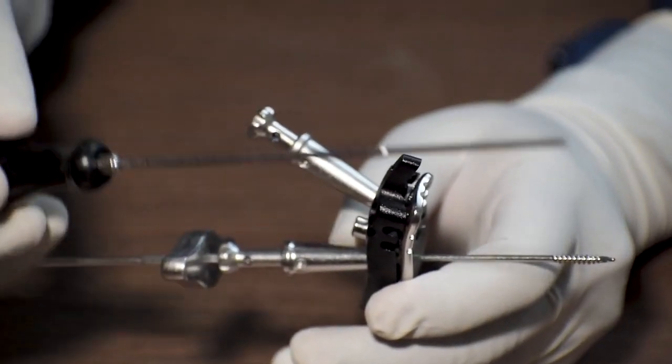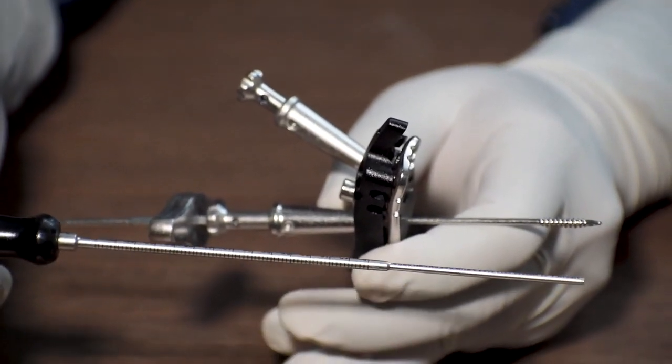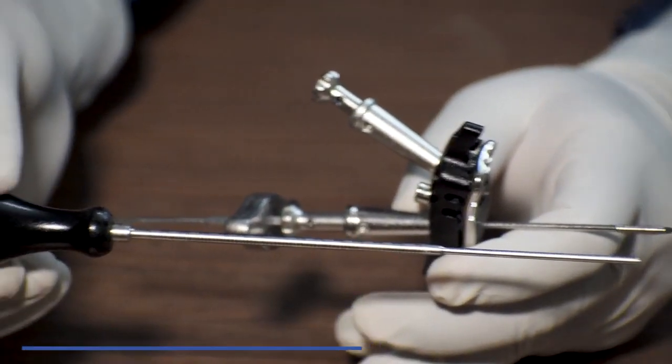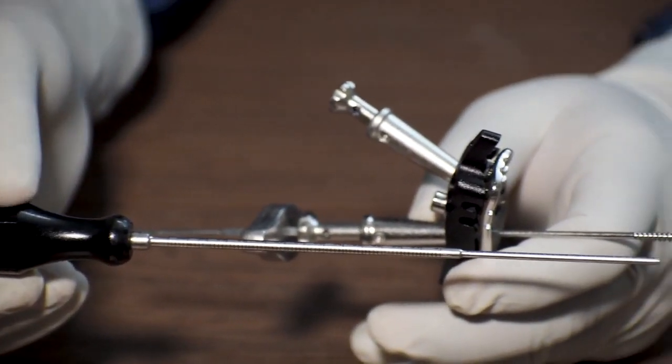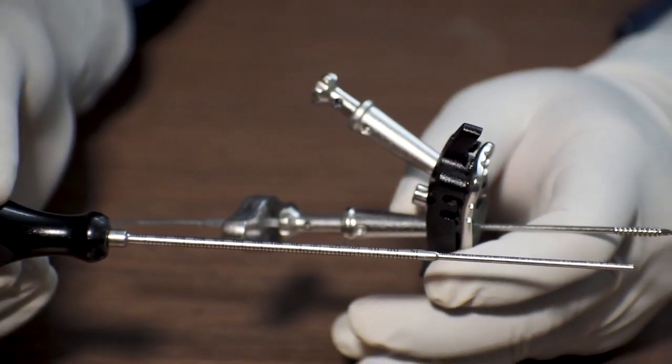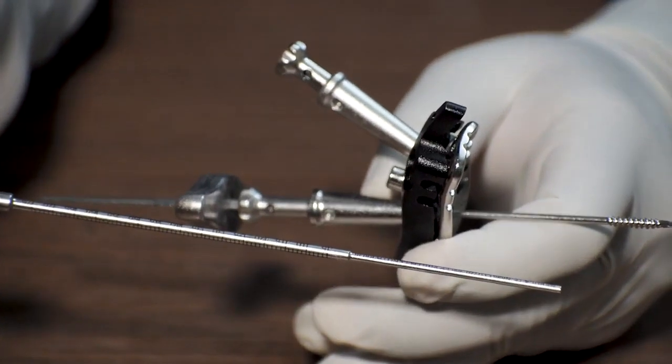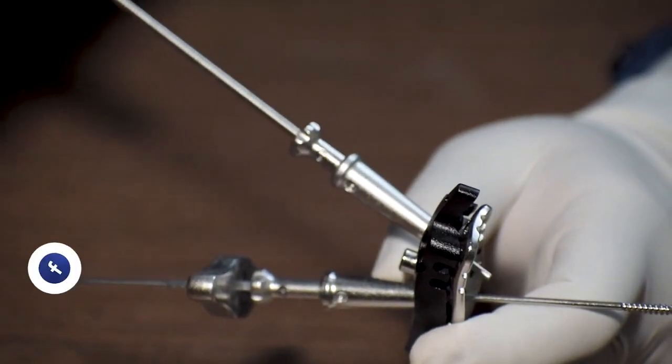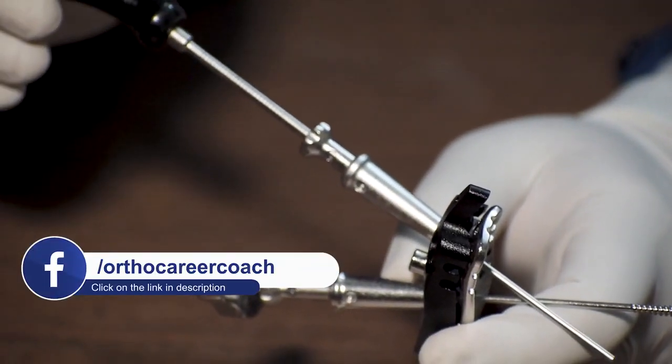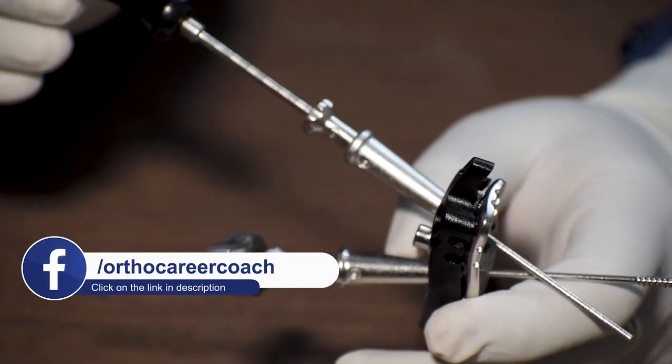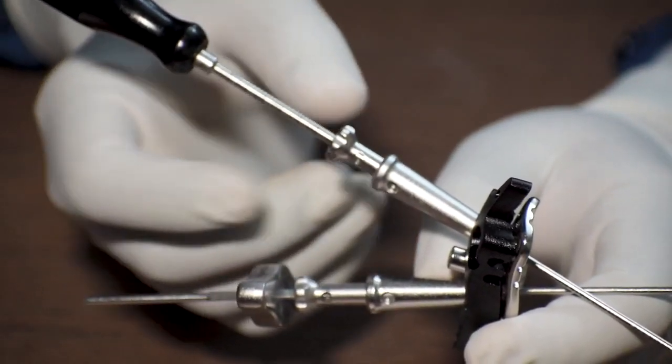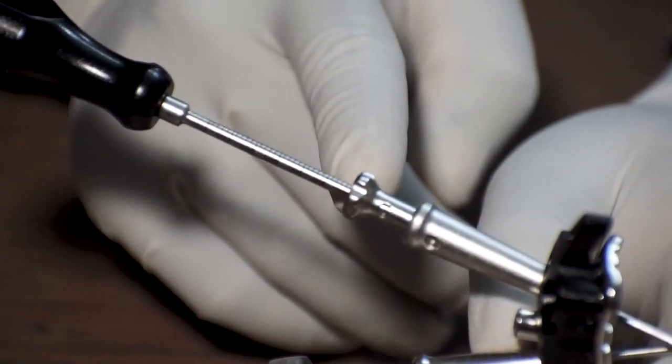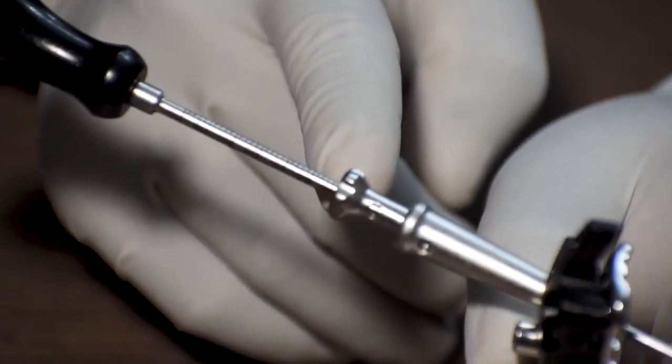There is another instrument that you can use which is called a Phyllos LCP Length Probe. This is used to measure the length of the screw that is needed to be fixed. We will insert the length probe through the drill sleeve till the point the drilling is done, and then we will record the measurement that comes, which in this case we consider as 45 mm. As you can see there are markings on the surface for you to record the length.